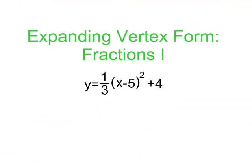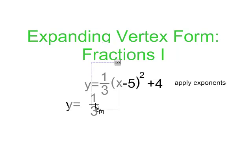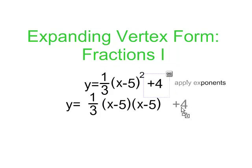So here we go. First thing we're going to do, we're going to apply the exponents. So this becomes y equals one-third, and x minus 5 all squared is just x minus 5 times x minus 5, and plus 4 has not changed.